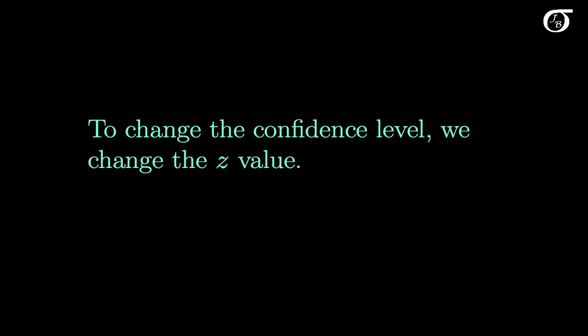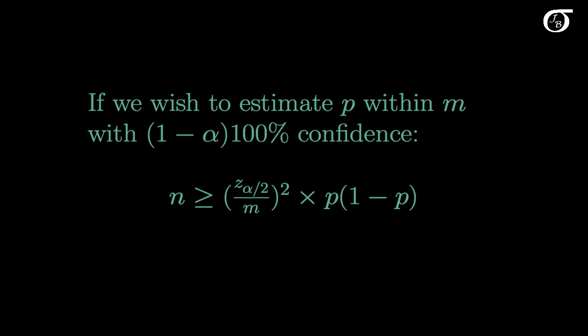And to change the confidence level, as per usual, we simply change the Z value. So after all is said and done, we're going to end up with this. If we wish to estimate P within M with 1 minus alpha times 100% confidence, then we have N is greater than this quantity here.